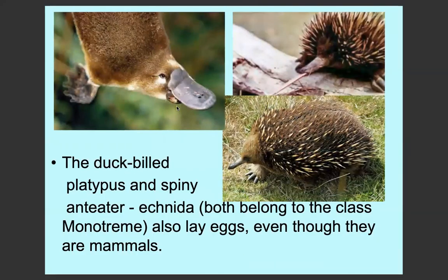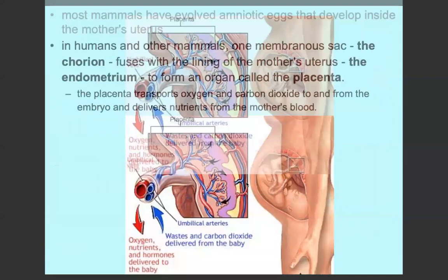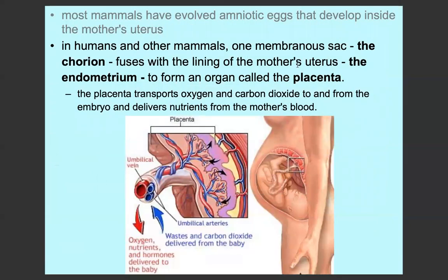The duck-billed platypus, the spiny anteater, and the echidna all belong to the class Monotremata, which is what was mentioned earlier. They are mammals but they do lay eggs, so they're oviparous. Most mammals have evolved a type of amniotic egg that develops inside the mother's uterus. In humans and other mammals, one membrane sac, which is the chorion, fuses with the endometrium — the lining of the mother's uterus — and forms the placenta, which is discussed in more detail in the pregnancy video.